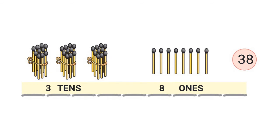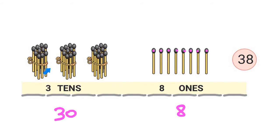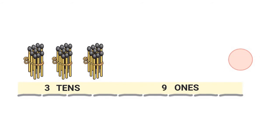Here I have 3 tens which is 30. And I have 1, 2, 3, 4, 5, 6, 7, 8 — that's 8 ones. 30 and 8 is 38. I have 38 matchsticks.